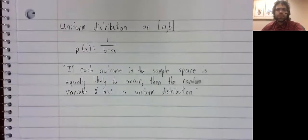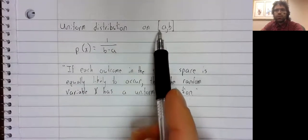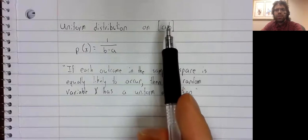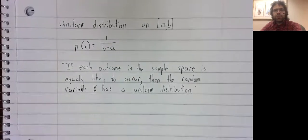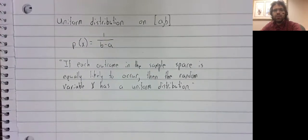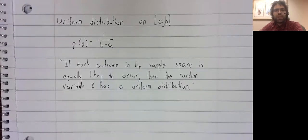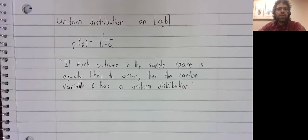In particular, if you have the closed interval from A to B, this probability density function represents the uniform distribution. What the textbook says of the uniform distribution is that if each outcome in the sample space is equally likely to occur, then the random variable X has a uniform distribution.